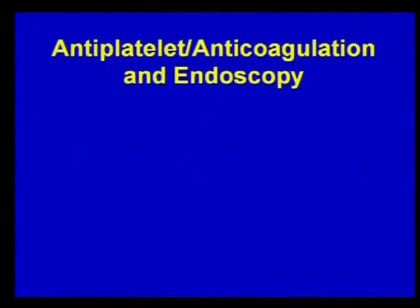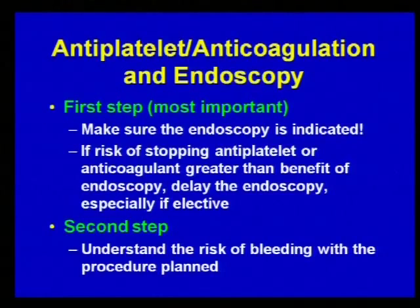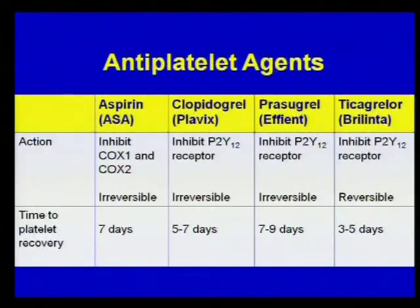When talking about antiplatelet and anticoagulation and endoscopy, the first and most important step — as this case illustrates — is to make sure the endoscopy is indicated. If the risk of stopping the antiplatelet agent or anticoagulant is greater than the benefit you'll achieve from the endoscopy, delay it — especially if it's elective. The second step is understanding not only the bleeding risk with the procedure planned, but also the risk and timeline of the various antiplatelet and anticoagulant medications.